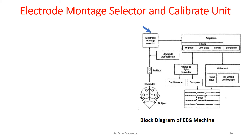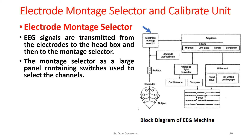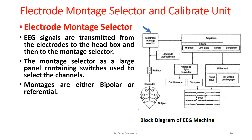Electrode Montage Selector. EEG signals are transmitted from the electrodes to the head box and then to the montage selector. The montage selector is a large panel containing switches used to select channels. Each channel is created in the form of input from one electrode, subtracting the input from the second electrode. Montages are either bipolar or referential. In order to minimize noise, a separate reference is often chosen for each side of the head.